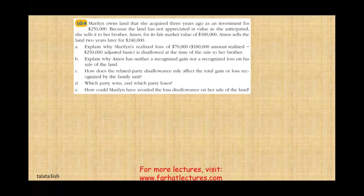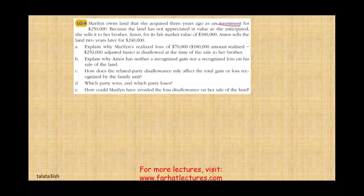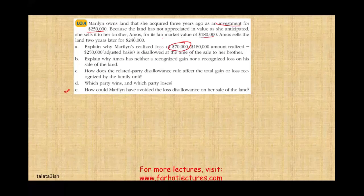Marlon owns land acquired three years ago as an investment for $250,000. Because the land has not appreciated as anticipated, she sells it to her brother Amos for its fair market value of $180,000. Marlon's realized loss of $70,000 is disallowed because it is a related party transaction between a brother and sister under section 267. So Marlon cannot deduct the loss. The better approach would have been not to sell to a related party.